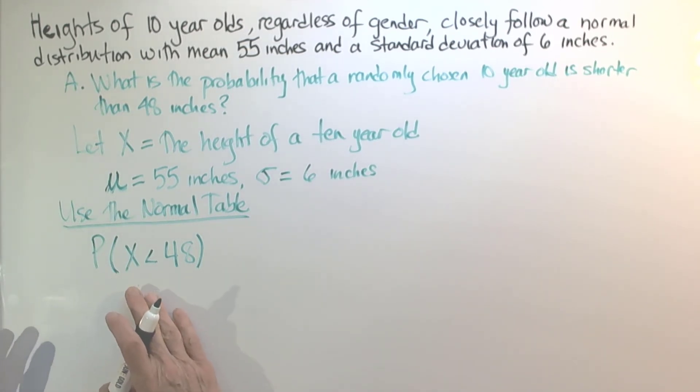Okay, so to find the probability that the height of a 10 year old is less than 48, we're going to start by calculating the z-score. Remember the formula for the z-score is X minus μ over σ. So given our values, we'll have 48 minus 55 divided by 6.